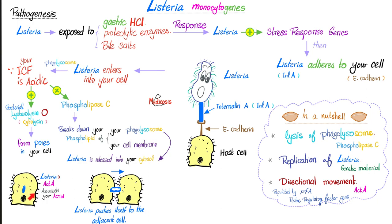Listeria keeps moving and swimming using its tumbling motility in your cell, thanks to Act A, which assembles your actin — part of the cytoskeleton, the trafficking system in your cell. If this wasn't enough, Listeria can leave one cell and go to the next. The pathogenesis of Listeria has three parts: number one, lysis of your phagolysosome thanks to Phospholipase-C; number two, replication of Listeria thanks to its own genetic material; and number three, directional movement within or between cells thanks to Act A assembling actin — sometimes called actin rockets. This process is regulated by PRFA, which stands for Positive Regulatory Factor Gene.